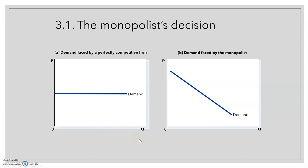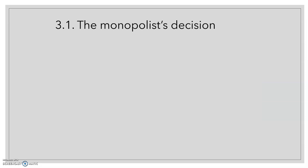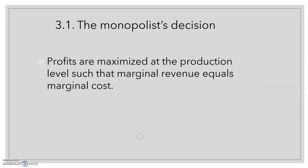How can we maximize profits if we are in a monopoly? The first order condition is that marginal revenue must equal marginal cost. This is the same as in perfect competition: when we maximize profits we compute the derivative of the profit function and set it equal to zero, which is the same as saying marginal revenue minus marginal cost equals zero, or that marginal revenue equals marginal cost.